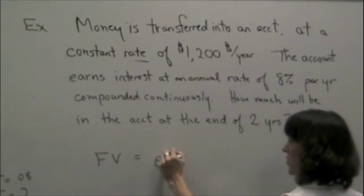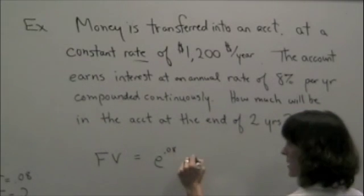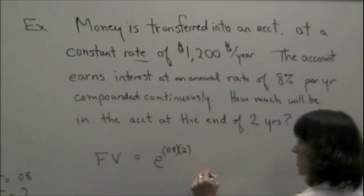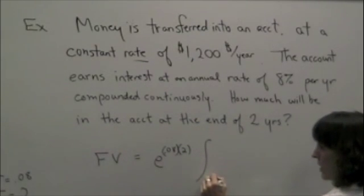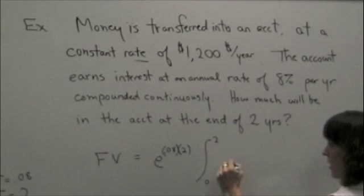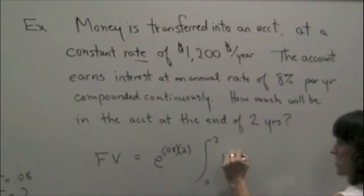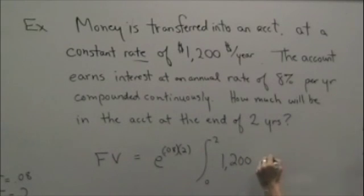Now I'm ready. E to the 0.08 times two, times integral from zero to two, and f of t is 1,200, times e to the negative 0.08 times t. How are we doing? I figured everything?